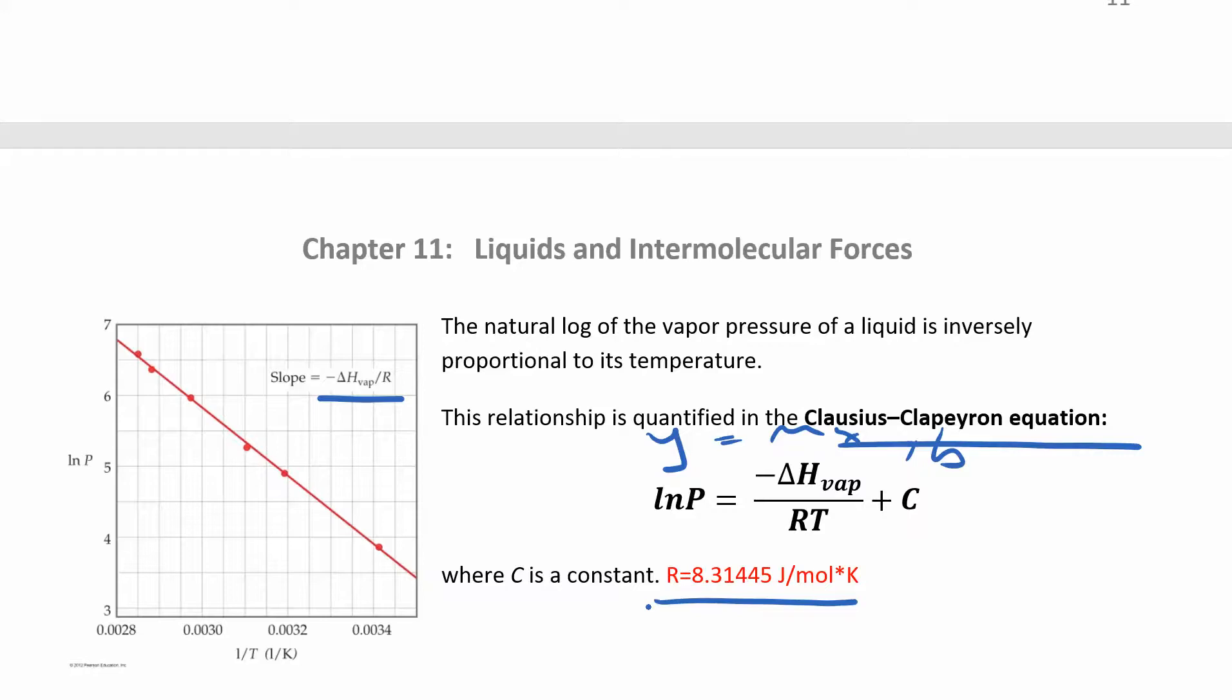Instead of liter atmospheres per mole Kelvin, we have joules per mole Kelvin. So there's just a quick conversion from liter atmospheres to joules. And then you get this equation. So this is a linear equation. You might see this in lab. I think we're going to use this in lab. You're going to measure the vapor pressure at different temperatures. And then from that, you'll be able to get the enthalpy of vaporization.